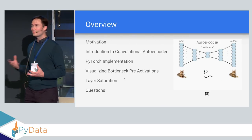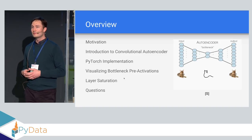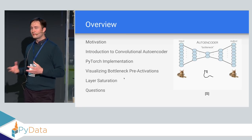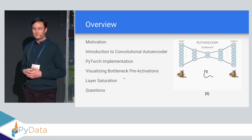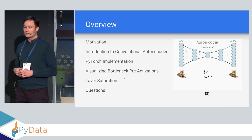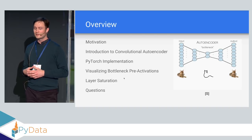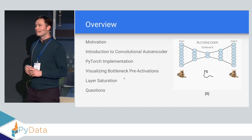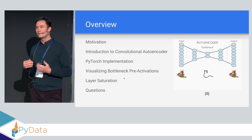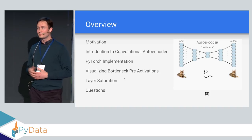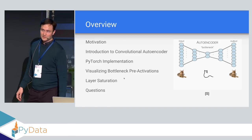I'll introduce some motivation for what makes improving neural network topology interesting, then introduce the convolutional autoencoder as the base model used in this research. I'll also motivate why I used a PyTorch implementation rather than TensorFlow, show some visualizations of pre-activations, and then give the final result for layer saturation — the metric used to determine how over- or under-parameterized your layer is.